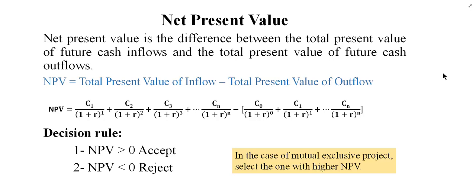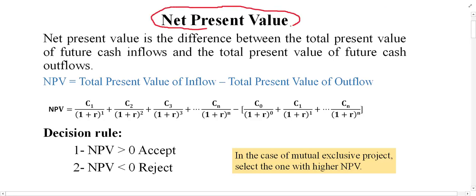Net present value is one of the capital budgeting techniques which is used for evaluation of projects or investments. It shows the profitability of a project in terms of amount, and based on that we can decide whether the project should be accepted or rejected. If we have several projects, we can decide which project is the best — whether project A, B, or C is good.